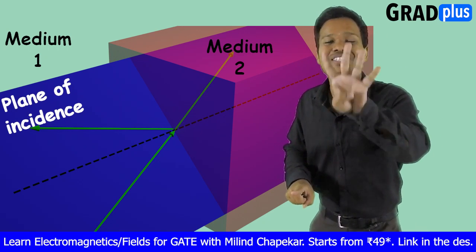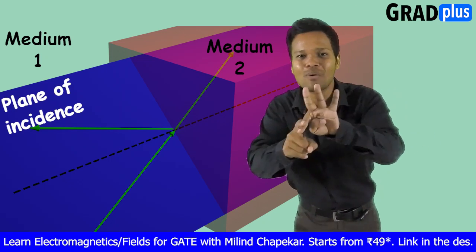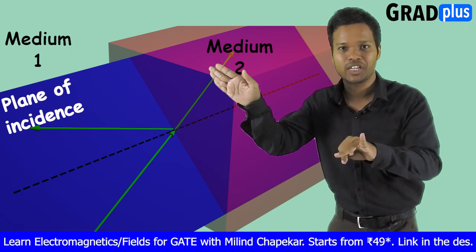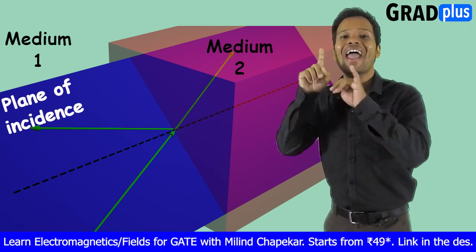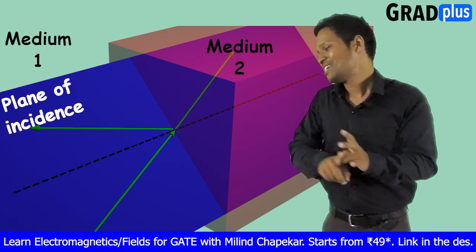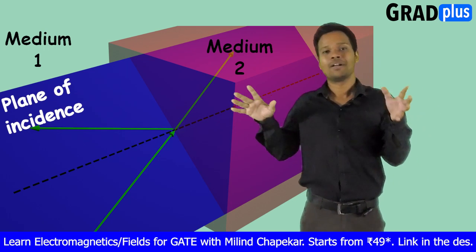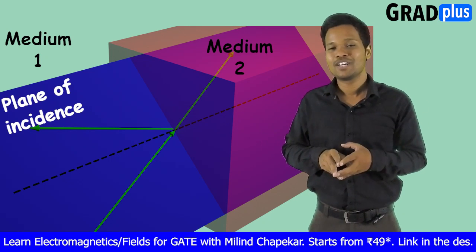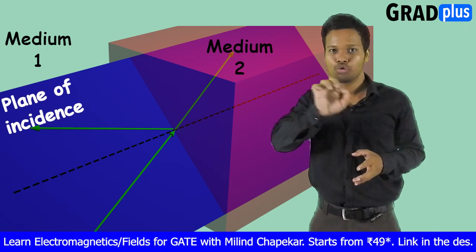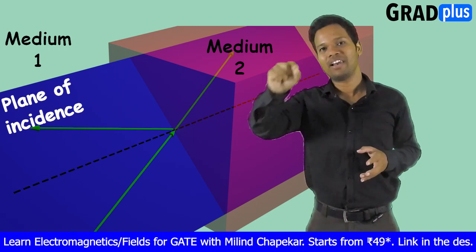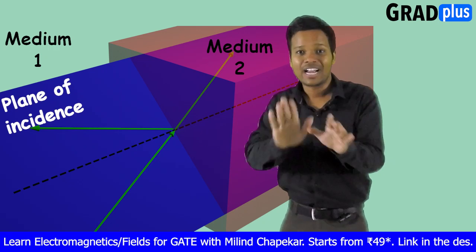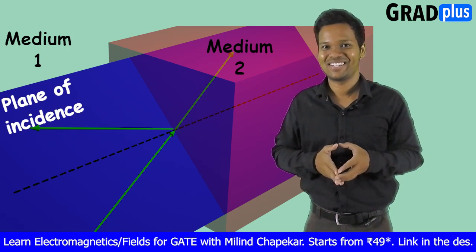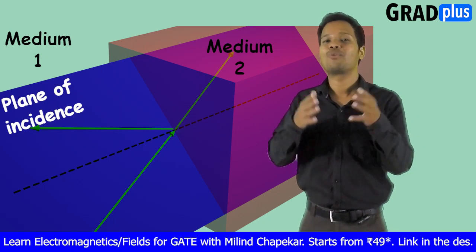You can also define the plane of incidence as the imaginary plane containing the normal to the boundary surface, the incident wave, the reflected wave, and the transmitted wave. The plane of incidence consists of four things: normal to the boundary surface, incident wave, reflected wave, and transmitted wave — where 'wave' means direction of propagation. And when you draw that 2D diagram on your paper, showing the incident wave coming from one side and the reflected wave going back, your plane of paper is nothing but your plane of incidence.